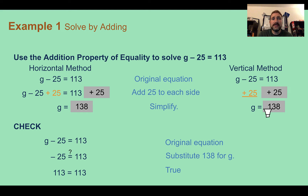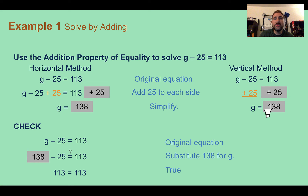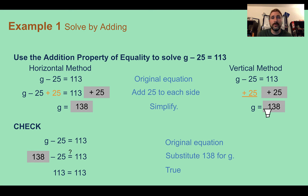Now that we think we have the answer, let's double-check. To check our answer, we take what we got and plug it back into the original equation. Instead of g, we substitute back in 138. Is 138 minus 25 equal to 113? Yes — we find the same thing on both sides, so it is true and we got the correct answer. Checking your answer is important because sometimes you'll find you made a tiny mistake.